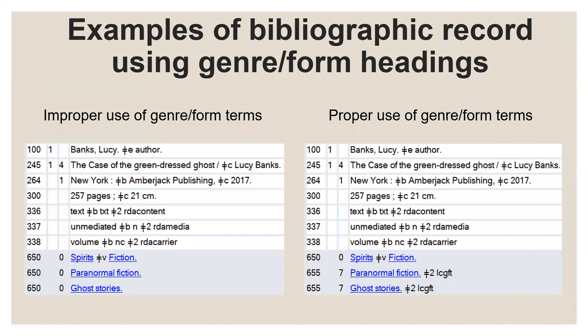Here are some examples of a bibliographic record using genre form headings. We're going to go back to the book The Case of the Green-Eyed Ghosts, a book about a man involved in the family business of catching supernatural ghosts — this story is a ghost story. On the left, you'll see the improper use of the genre terms 'ghost stories' and 'paranormal fiction.' Using the terms in this fashion would be for a book about paranormal fiction and ghost stories, instead of a book that is a ghost story. The record on the right shows the proper use of the terms, since the book is a ghost story and is paranormal fiction.